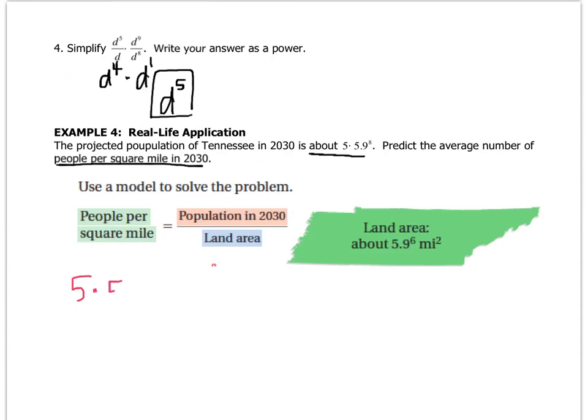So people per square mile, they tell me, is 5 times 5.9 to the 8th. That's equal to, oh, whoops, I put it in the wrong spot. That's not the population per square mile. That's what I have to figure out. Duh. So I'll leave that as P. The population in 2030 is 5 times 5.9 to the 8th. I'll use parentheses. Divided by the land area, which is 5.9 to the 6th.